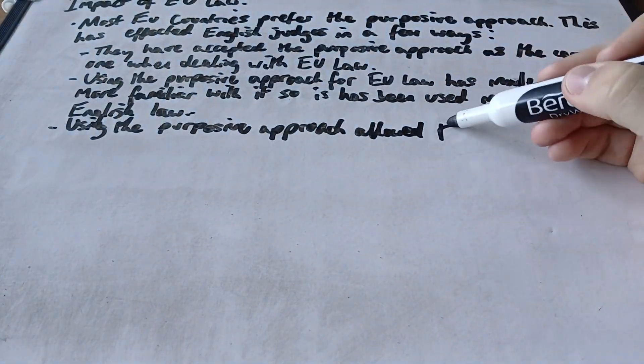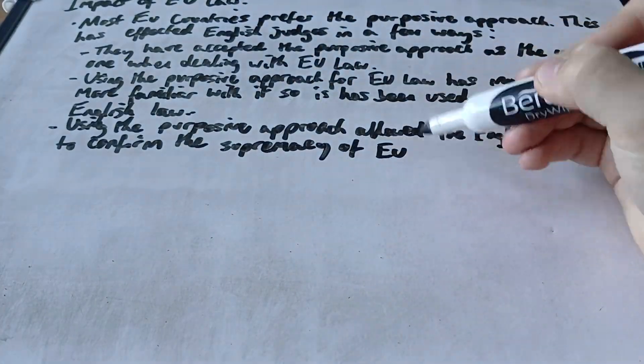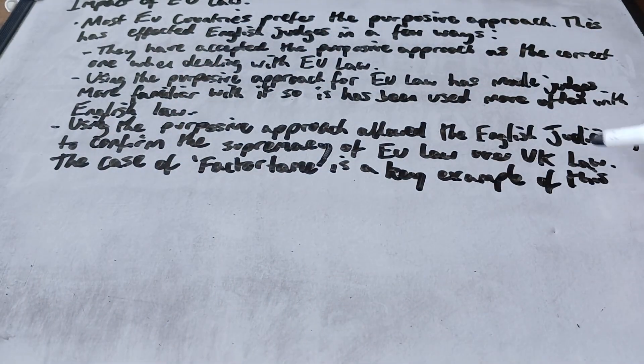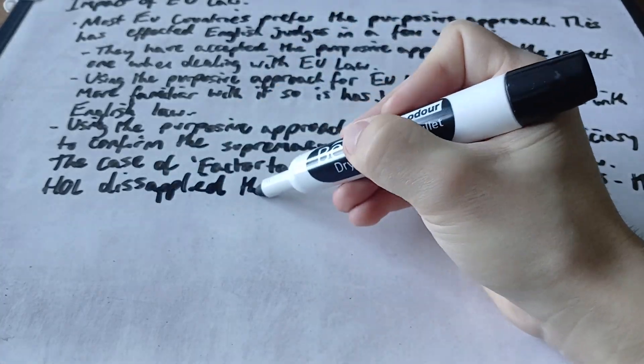Using the purposive approach allowed the English judiciary to confirm the supremacy of EU law over UK law. The case of Factotame is a key example of this where the House of Lords disapplied the Merchant Shipping Act.